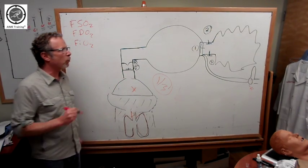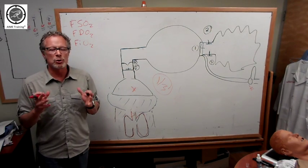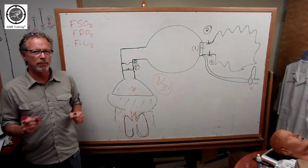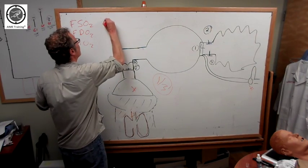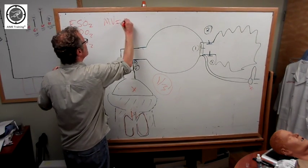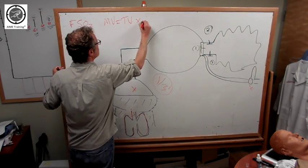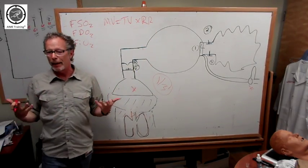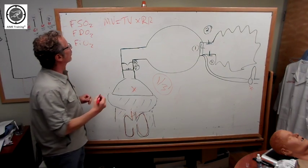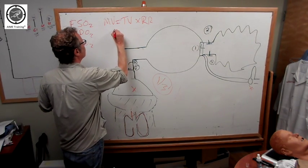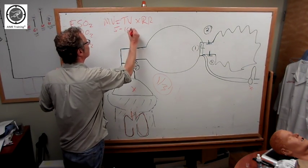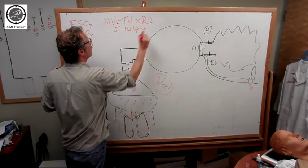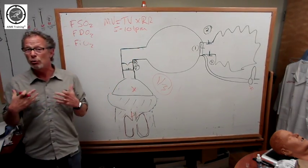That's important because flow is critical because we need to match the minute ventilation of the patient. Let's remind you again, minute ventilation is equal to tidal volume times respiratory rate. In the normal patient, normal varying according to size, that could be anywhere from 5 to 10 liters per minute.